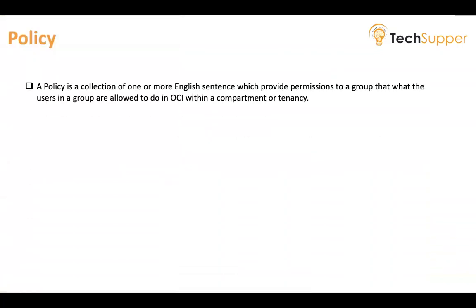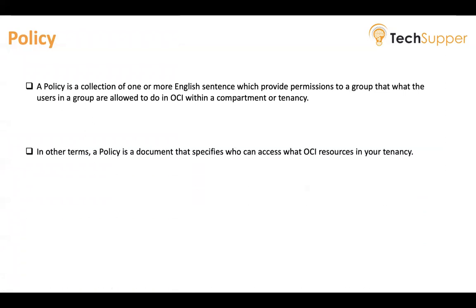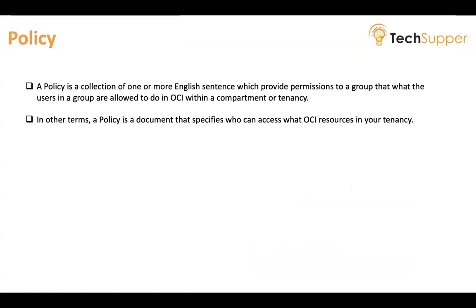First of all, let's understand what a policy is. A policy is like an authorization — it's a collection of one or more English sentences which provide permission to a group, defining what a user in a group is allowed to do in OCI within a compartment or tenancy. Every resource belongs to a particular compartment, and we give access to a compartment to a group via a policy.